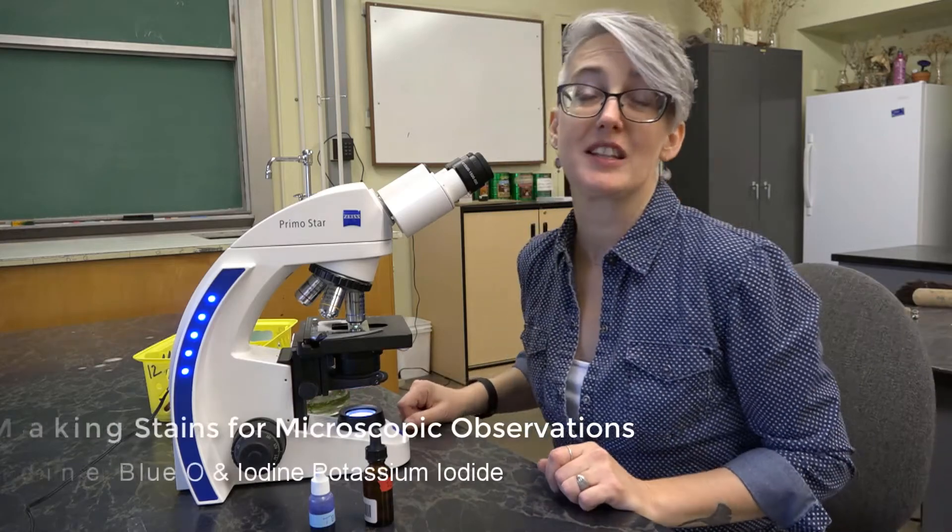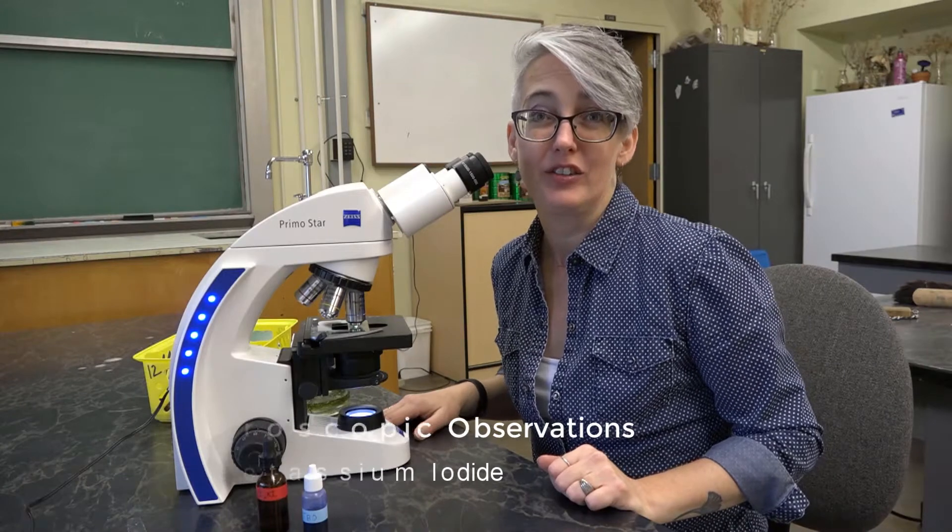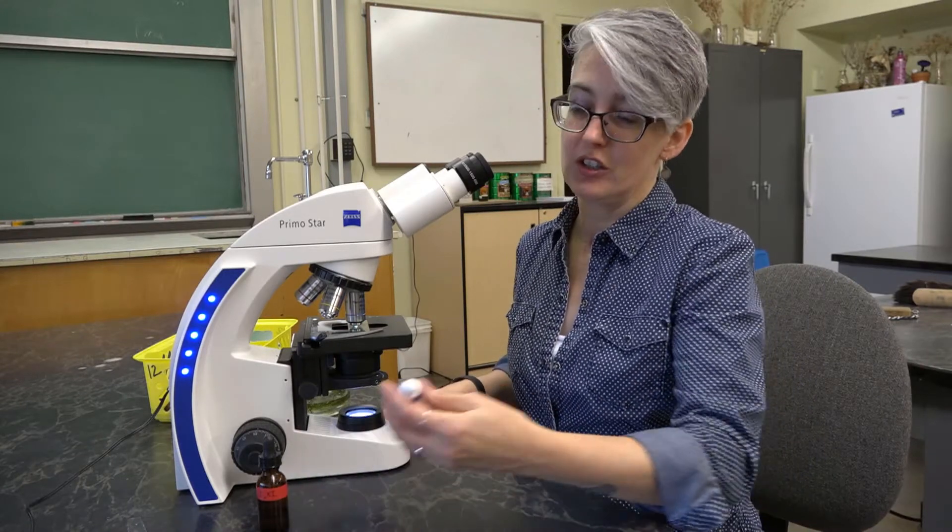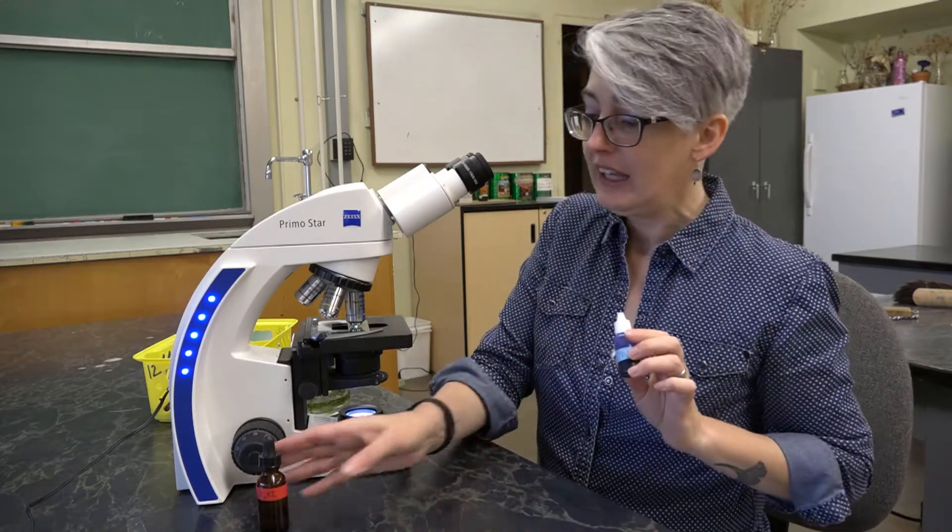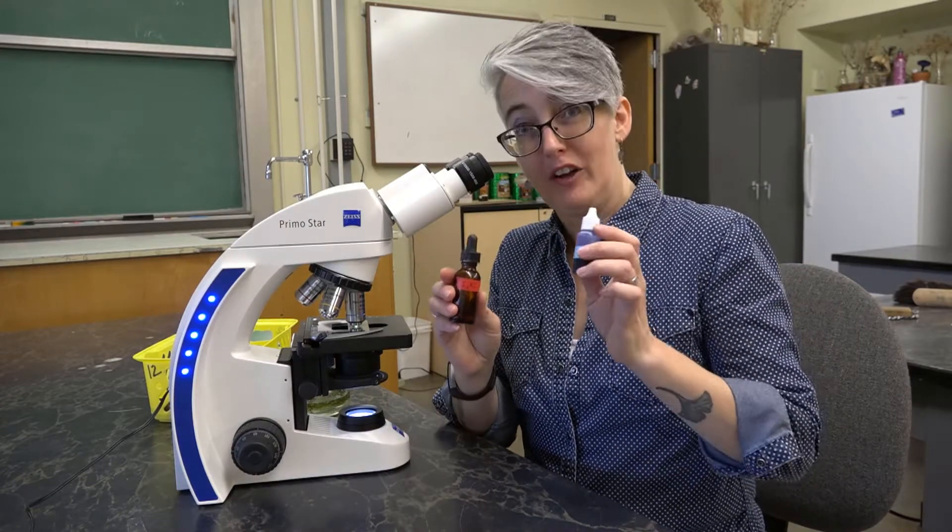Wow! Biological stains make plant cells pop. Two general-purpose stains that I use to look at plant tissues are toluidine blue, TBO, and iodine potassium iodine. Stay tuned to find out how you can make some.